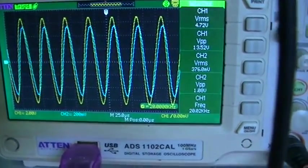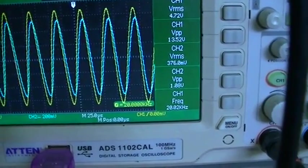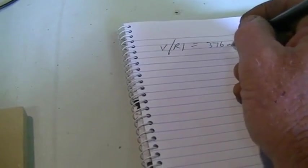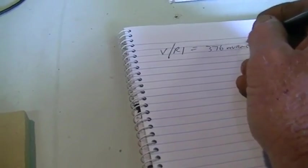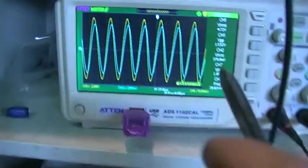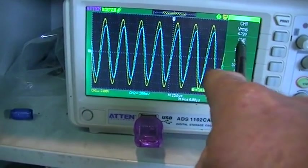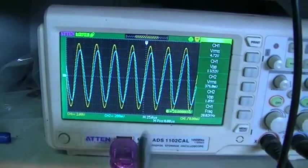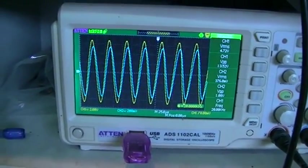So our voltage over R1 is 376 millivolts. And our voltage across R1 and the primary coil now is 4.72 volts.